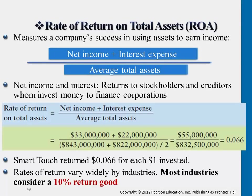Here's an example. Assume that at the beginning of this year, total assets on the balance sheet — including current assets, long-term assets, and all types covered in Chapters 8 and 9 — total $843 million. That's last year-end. Assume this year-end the total assets are $822 million. We average those two: add them together and divide by 2 to get average total assets, then compare against total return.